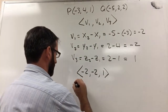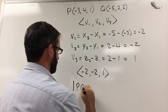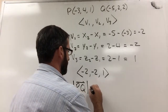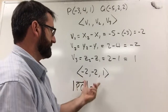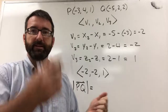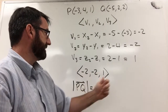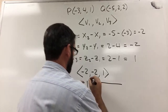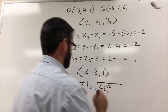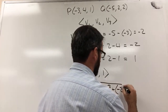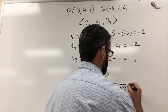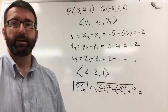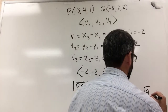Now to find the length — the length of vector PQ — we use the same formula as finding the distance between two points. Since we already have the component distances, we compute: negative 2 squared, plus negative 2 squared, plus 1 squared. That's 4 plus 4 plus 1, which equals 9. So the length is the square root of 9, which is 3.